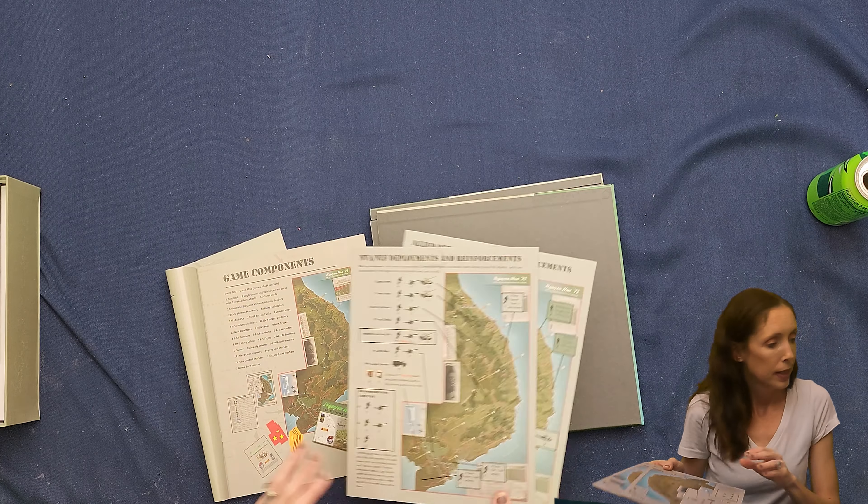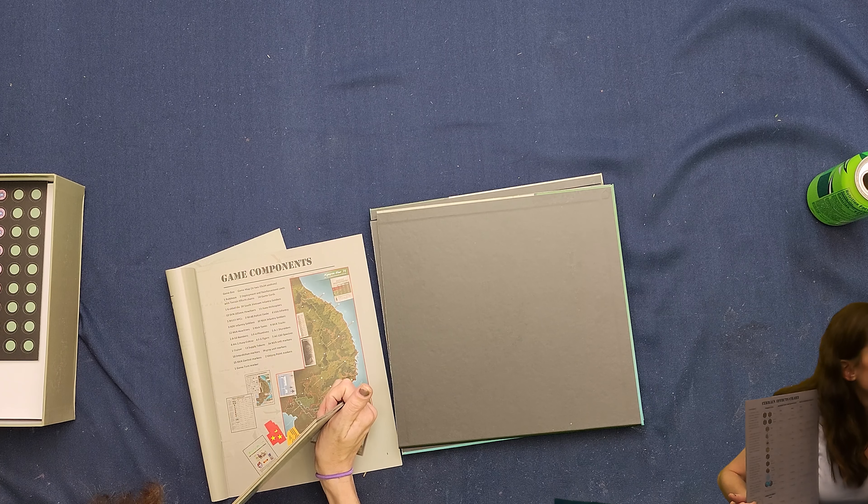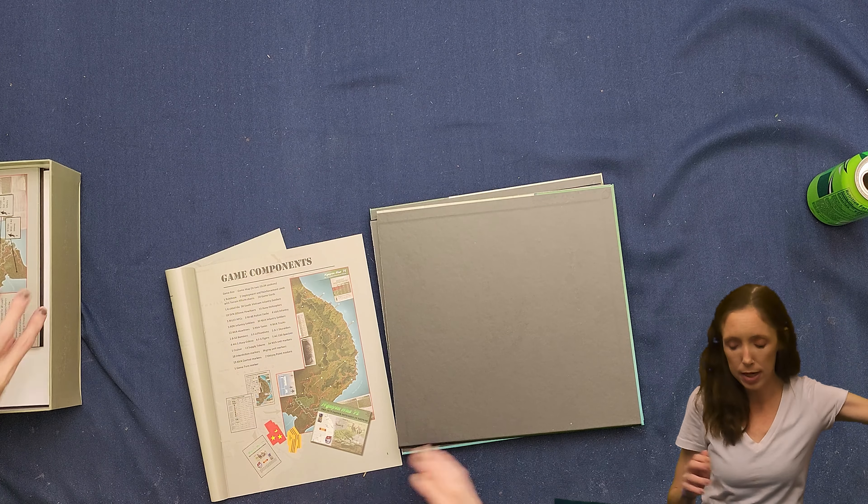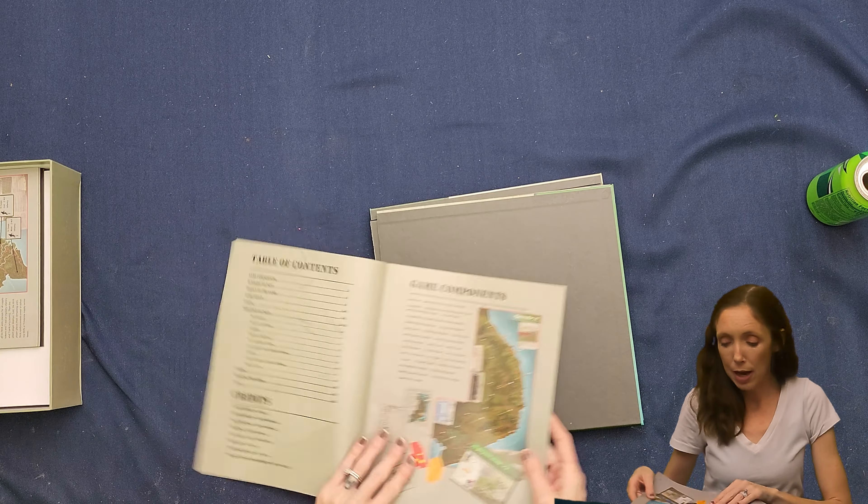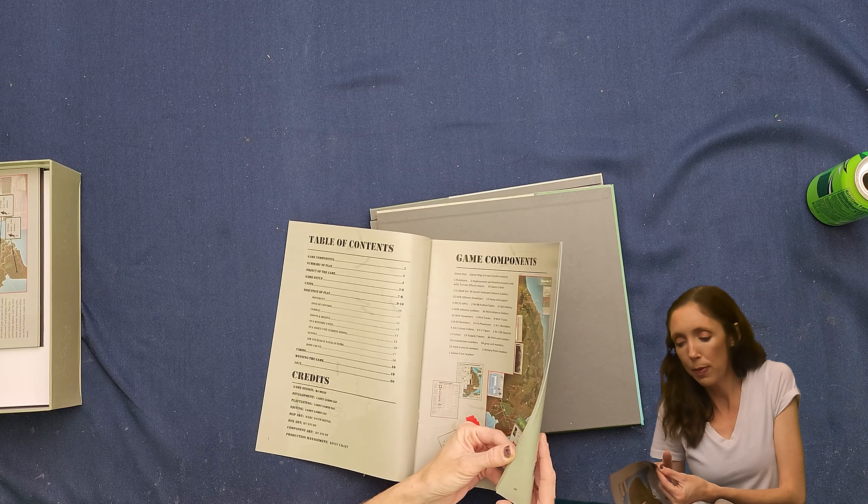So each side will have a terrain effects chart on the back of their deployment and reinforcement card because it is only for two players. So actually it said one to two players, right? No, it just says two players. So it's for two players, not solitaire as far as I can see. So that was the rule book really quick, even though I started showing you other stuff, the rule books, 20 pages.